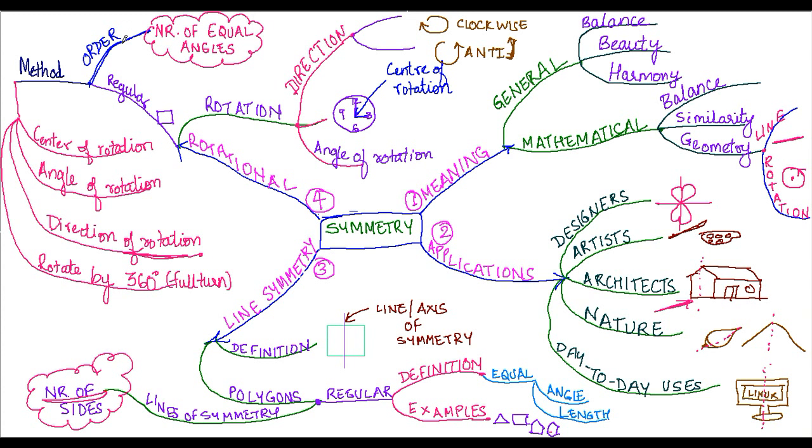That will give you the order of the rotational symmetry for the regular polygon. We also figured out that the order of rotational symmetry for regular polygons is equal to the number of equal angles. With this we conclude our summary of the chapter on symmetry.